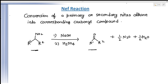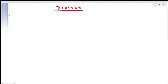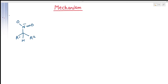This method provides a route for the synthesis of carbonyl compounds from a nitrogen-containing compound. Now let's look at the mechanism. There is a positive charge and a negative charge on the NO2 group. In the first step, the OH minus coming from NaOH (the base) attacks the proton, causing this bond to shift and resulting in the removal of a water molecule.